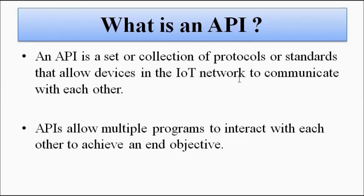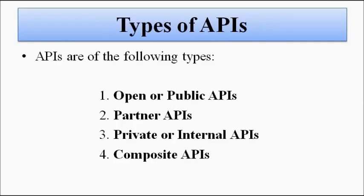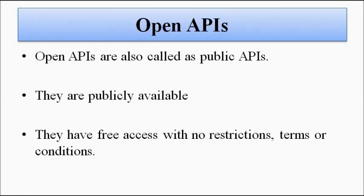This is the API. There are various types of Application Program Interfaces. The first one is the open or public API, then the partner APIs, the private or internal APIs, and the composite APIs. Let us discuss them briefly. The first one is the open API.